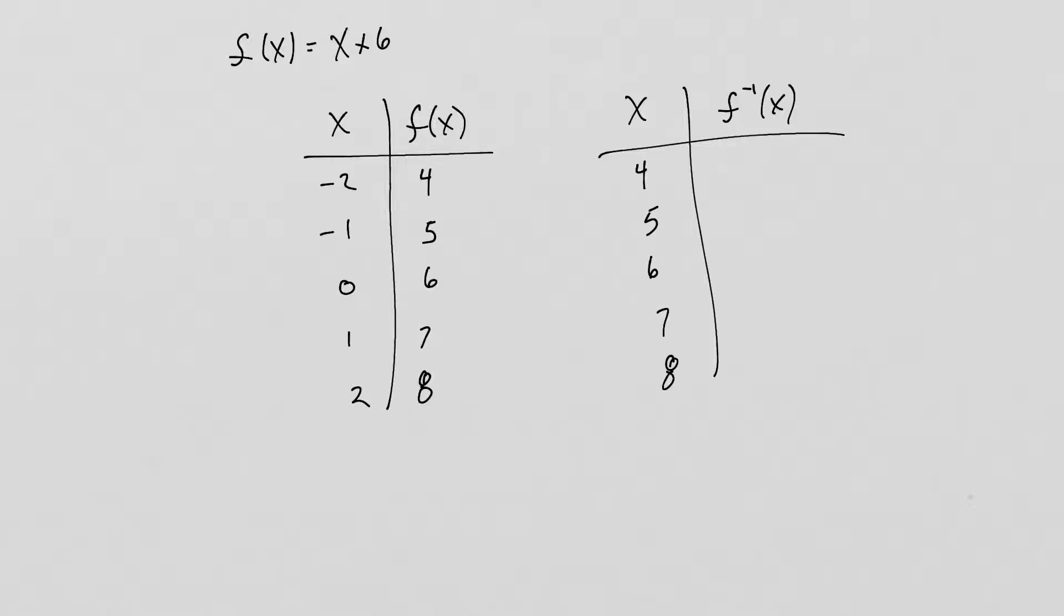Take my x column, and that becomes my F inverse of x or my y. So it will be -2, -1, 0, 1, 2.